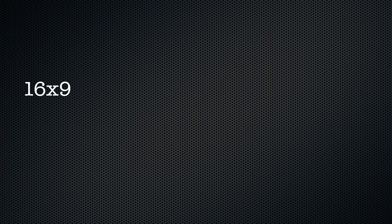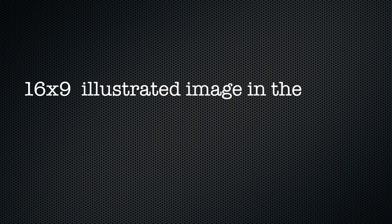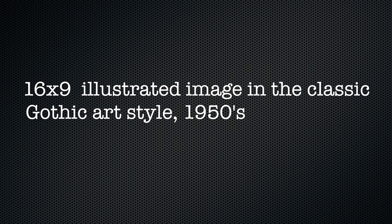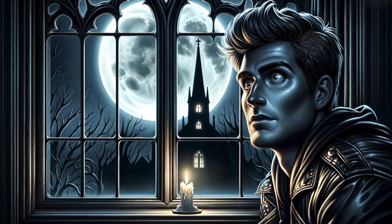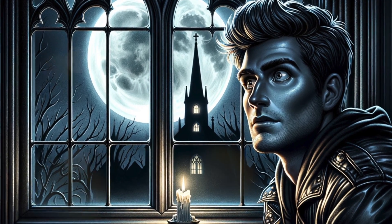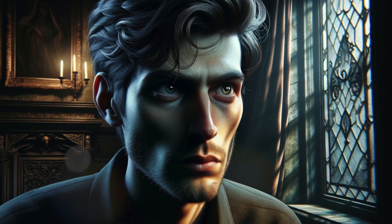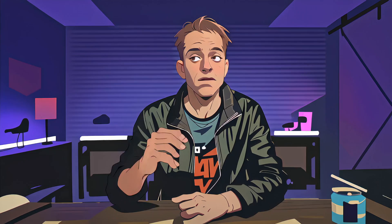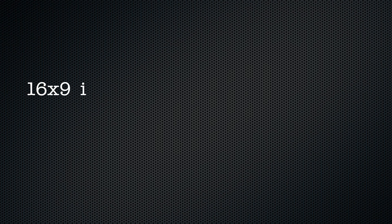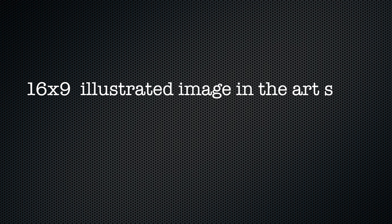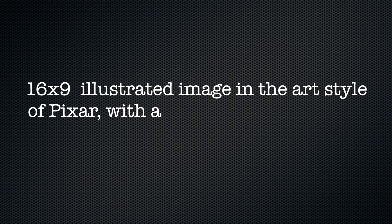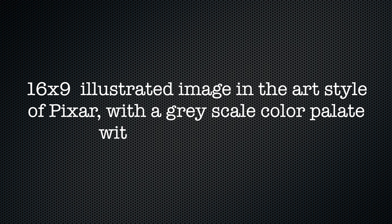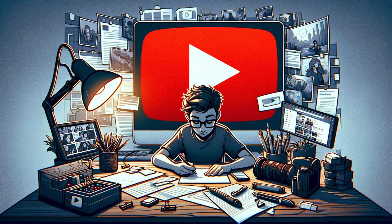The way I generate these is I always begin with a prompt that mentions 16 by 9 and then the art style — so '16 by 9 image in the classic Gothic style often found in 50s, 60s, and 70s horror movies, reminiscent of Hammer Horror,' and that's what helped me generate these particular images. I also sometimes mention things like grayscale as far as the color palette goes. When I started doing that, I really loved the imagery I got back when striving to generate images based on the Pixar style. I noticed when I asked for simply Pixar, I got a lot of varied colors, but by focusing on grayscale and also mentioning a slight blue hue, I got these images back.